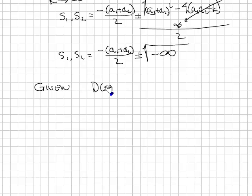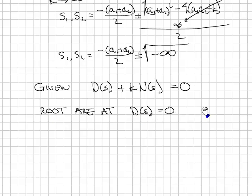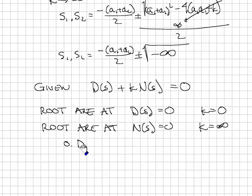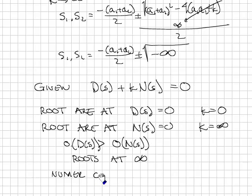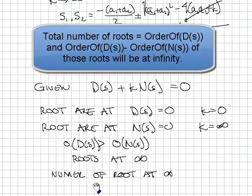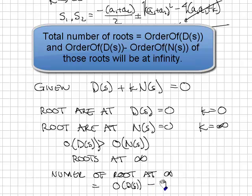I'm just going to write down our rules. Given a polynomial, D(s) plus k N(s) equals 0. Roots are at D(s) equals 0 when k equals 0. Roots are at N(s) when k equals infinity. And the case where the order of D(s) is greater than the order of N(s), we'll find that we have roots at infinity. Number of roots at infinity equals the order of D(s) minus the order of N(s).